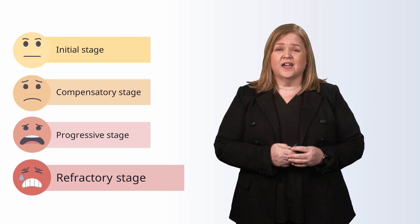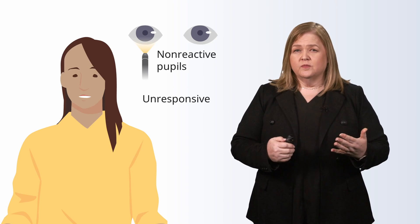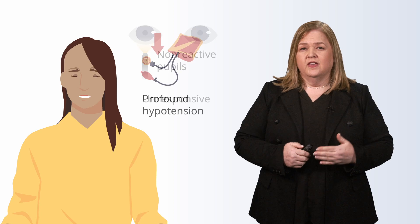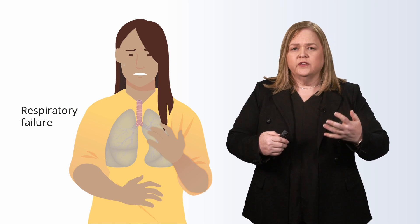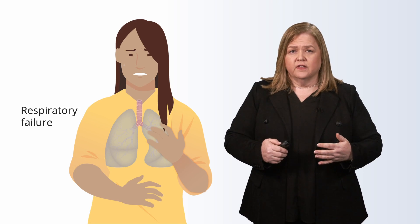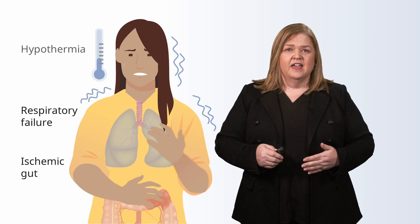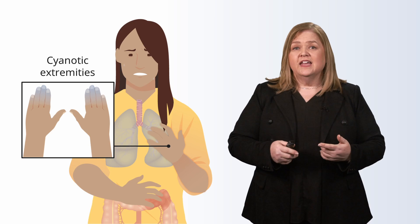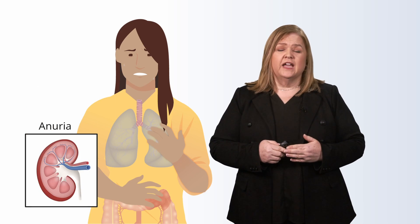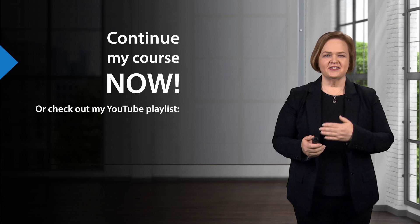Now we're at the refractory stage — the saddest one of all. The pupils are non-reactive and the patient is unresponsive. The hypotension is profound and cannot be raised. They're in respiratory failure. One by one, all the organs are responding to the lack of oxygen. The gut is ischemic. The patient cannot control their body temperature and has severe hypothermia. The hands that were pale, then clammy, are now cyanotic. The kidneys are producing no urine — they're anuric.